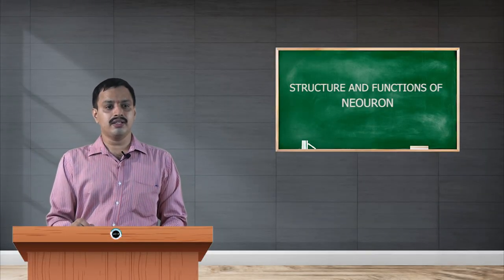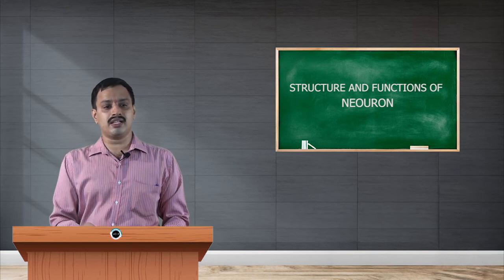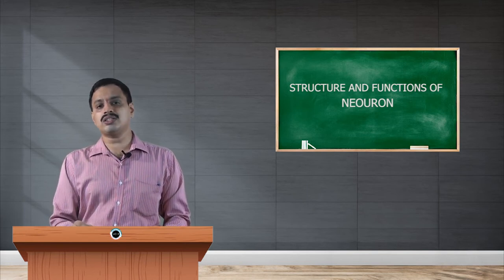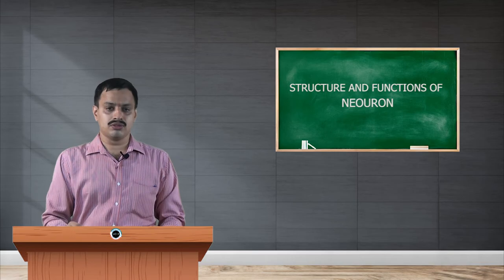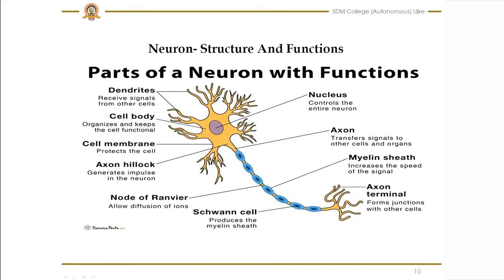In between the myelin sheath there are nodes of Ranvier. Nodes of Ranvier control the speed of neural impulses — they reduce the speed of neural impulses. Then there are Schwann cells. Schwann cells are simple cells that produce the myelin sheath.